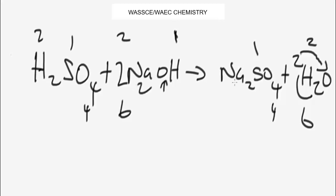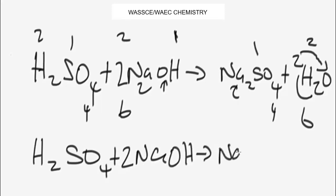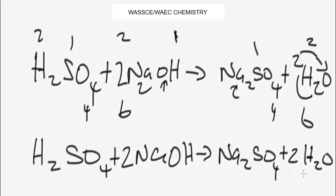For sodium: we have two atoms of sodium on the left and two atoms on the right — sodium is balanced. So the balanced equation is: H₂SO₄ + 2NaOH → Na₂SO₄ + 2H₂O. We have four atoms of hydrogen, one atom of sulfur, six atoms of oxygen, and two atoms of sodium on each side. The chemical equation is now balanced.